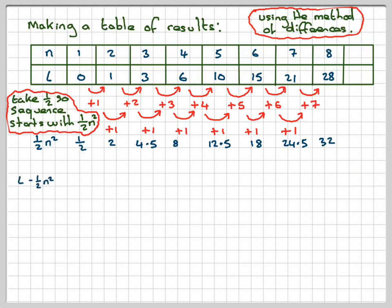So now, if we now work out L minus this, we'll find out what we've got left. So, 0 minus 1/2 gives me -1/2. 1 minus 2 gives me -1. 3 minus 4.5 gives me -1.5. 6 minus 8 gives me -2. 10 minus 12.5 gives me -2.5. 15 minus 18 gives me -3. 21 minus 24.5 gives me -3.5. 28 minus 32 gives me -4.